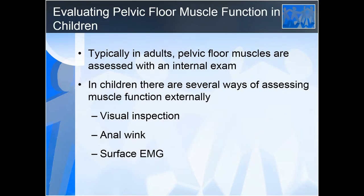When evaluating children, we typically assess pelvic floor muscles with an internal exam in adults, but this is not what we do in the pediatric population. According to the American Academy of Pediatrics, under the age of 16 we really should not be doing much internal exam. We often assess muscle function externally through visual inspection of the perineum, an anal wink to check intact sensation, or surface EMG, which is a really good tactic to assess pelvic floor muscle function in children.